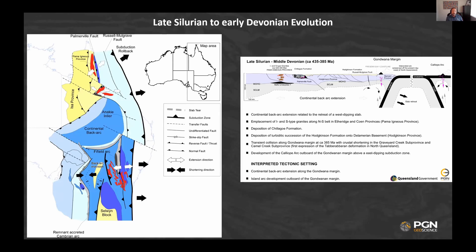Stepping through to the Silurian and early Devonian — Rashid and Gideon's paper from 2018 has done a lot of work on that time period. We're in complete agreement that rollback is generating a lot of truncations and strike-slip faults occurring through the Greenvale province, the edge of the Chilago, and into the edge of Charters Towers. The cross-section schematically shows double divergent subduction — everybody looks at that and thinks you can't have that with nothing in the middle, but that's a space issue. We think the Kalopi arc is forming well offshore or outboard of the whole system.